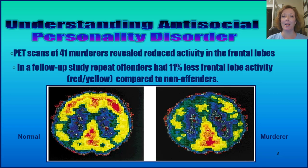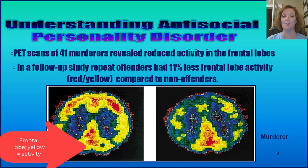Let's talk about brain differences in people with antisocial personality disorder. In a research study, PET scans of 41 murderers revealed reduced activity in the frontal lobes. The frontal lobes are the part of the brain responsible for judgment, impulse control, and a lot to do with our personalities overall. In a follow-up study, repeat offenders had 11% less frontal lobe activity compared to non-offenders. Take a look at the scans on your screen — you can see very clearly the difference.